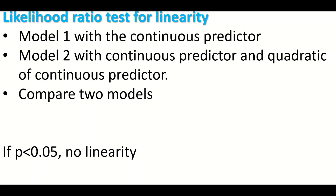Compare the two models using the likelihood ratio test and determine the p-value. If the p-value is less than 0.05, the alternative hypothesis is accepted, indicating there is no linear relationship between the continuous predictor and the outcome, and that predictor cannot be included in the analysis as it has violated the linearity assumption. However, if linearity is confirmed, the continuous predictor can be included in the binary logistic regression.